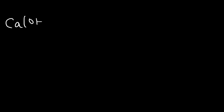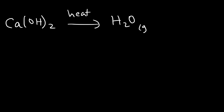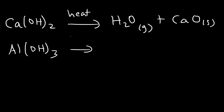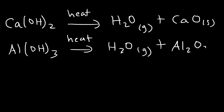If we have a metal hydroxide and add heat to it, water will evaporate and once water is removed you get the metal oxide. For example, if we heat aluminum hydroxide, water leaves behind aluminum oxide. To balance: put a two in front of aluminum hydroxide — giving two aluminum atoms and six oxygen atoms — so we need a three in front of H₂O. Anytime you heat a metal hydroxide it produces water and the corresponding metal oxide.